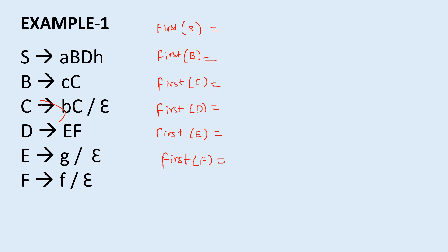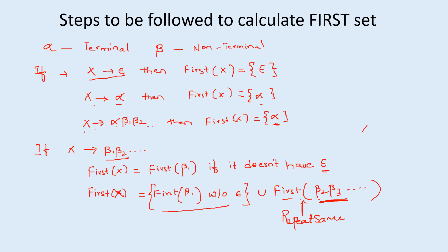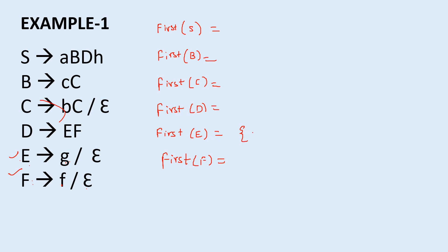E has two productions: E → g (terminal) and E → ε. So first of E = { g, ε }. F has two productions: F → f (terminal) and F → ε. So first of F = { f, ε }. C → bc and ε: since 'b' is a terminal followed by non-terminals, the first of C is { b, ε }.